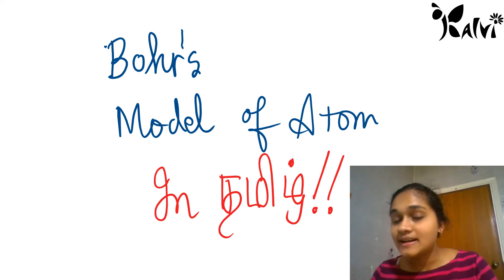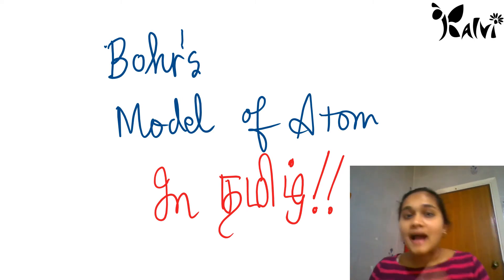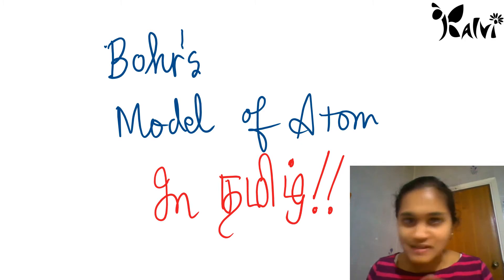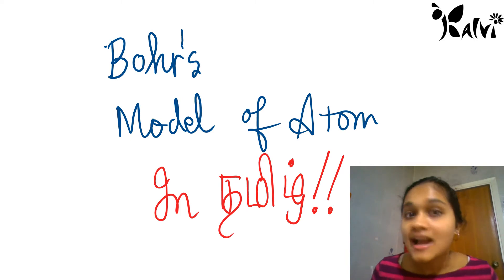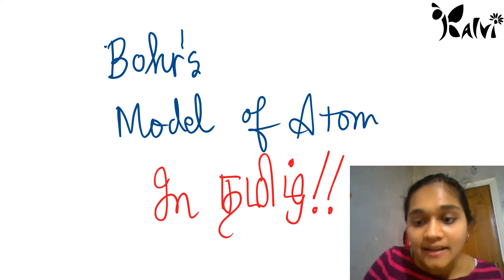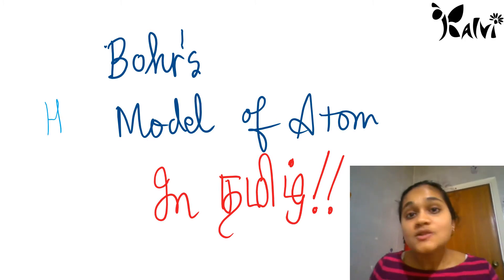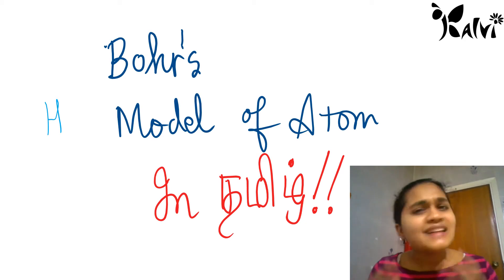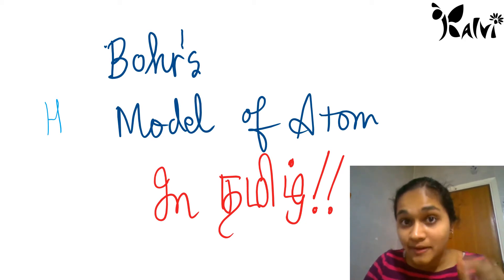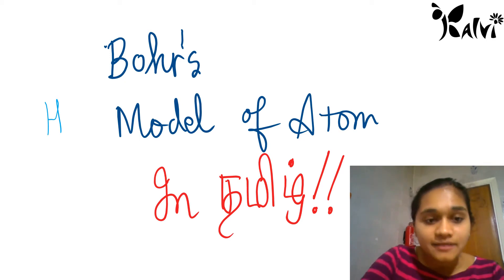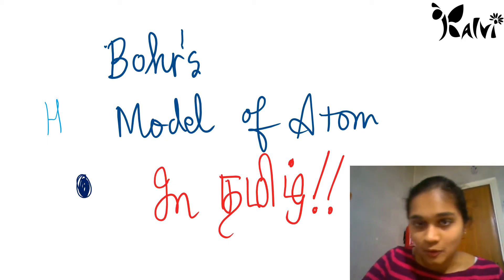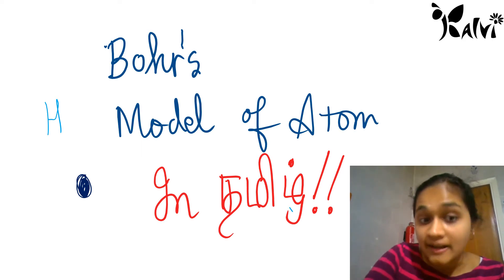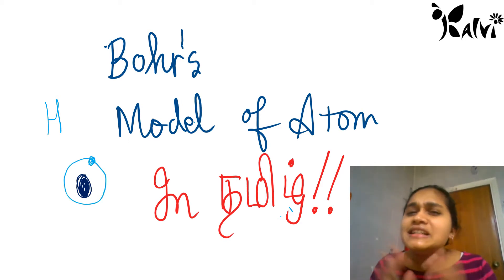Niels Bohr is a scientist. We are talking about hydrogen atoms and H in chemistry. Hydrogen atoms are very special. Why is it special? Hydrogen atoms have one electron. That means the nucleus is at the center with a positive charge, and hydrogen has just one electron. That is why hydrogen is simple and small.